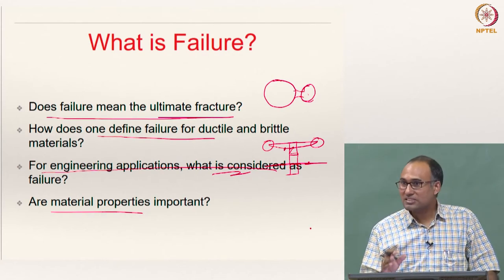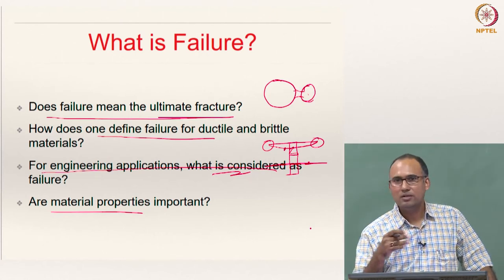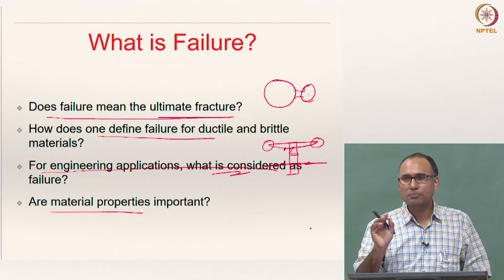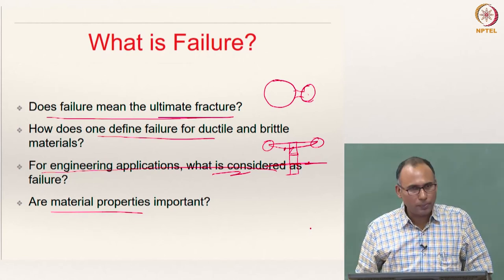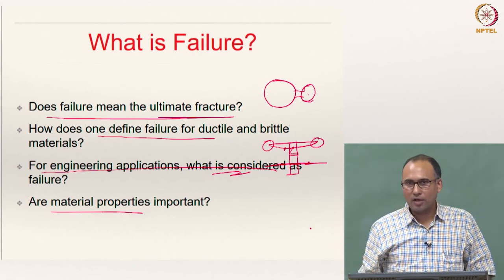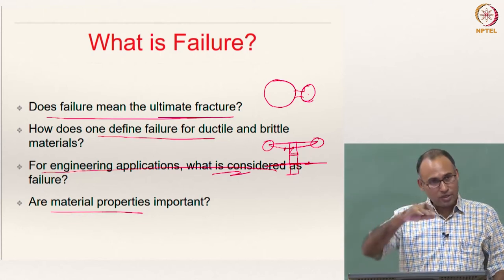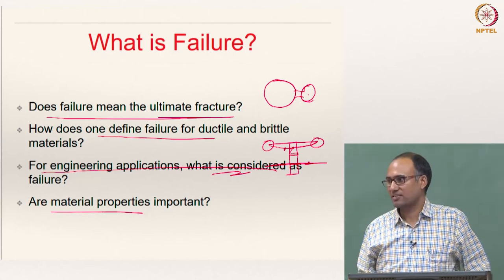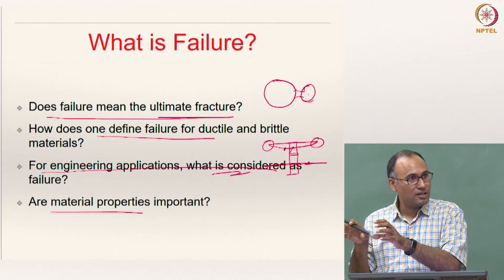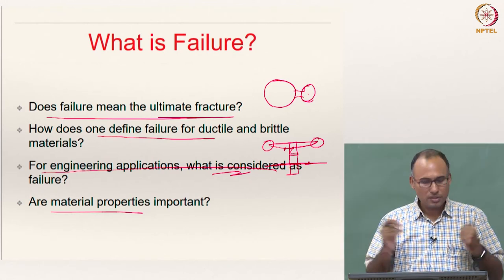When dealing with ductile materials, failure means reaching the yield strength of the material — that is what we mean by failure. Whereas for brittle materials, it is extremely difficult to identify something called yielding. Brittle materials may fail by breakage because there is no observable plastic deformation, and hence brittle materials do not show a clear yield strength and usually break due to fracture. Therefore, whenever you are designing with a brittle material, you have to design for the ultimate strength. The definition of failure is different for ductile and brittle materials — that is important to realize.